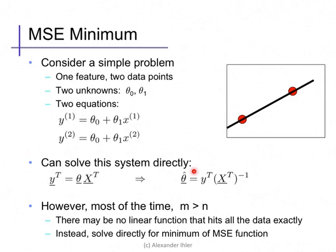More generally, x is not square and thus not invertible. But if m is greater than n, this corresponds to there being no linear function that hits all the data exactly, and instead we'll solve directly for the minimum of the mean squared error function.